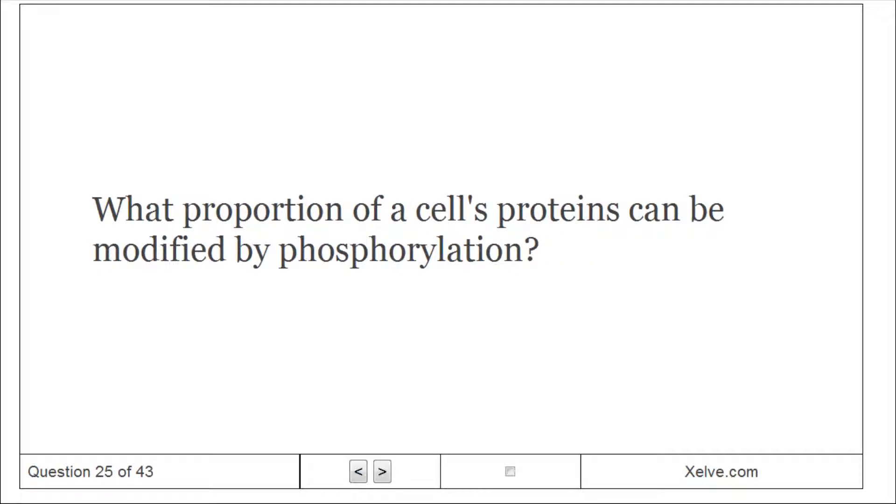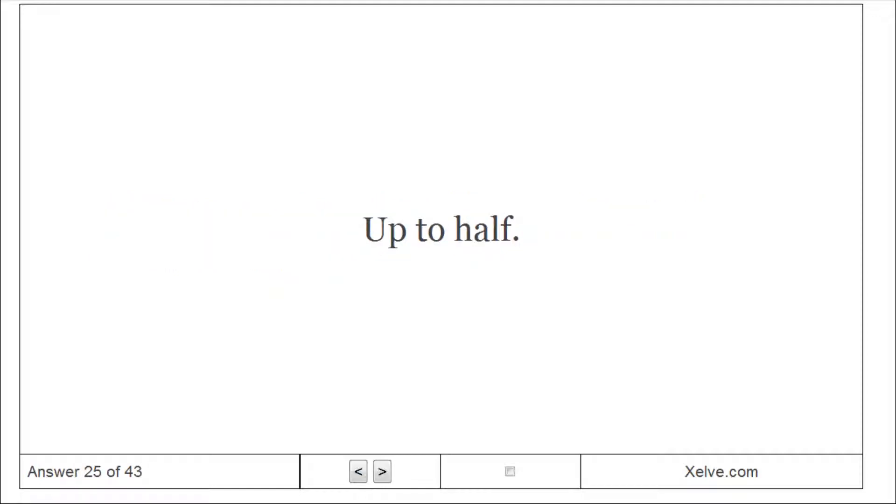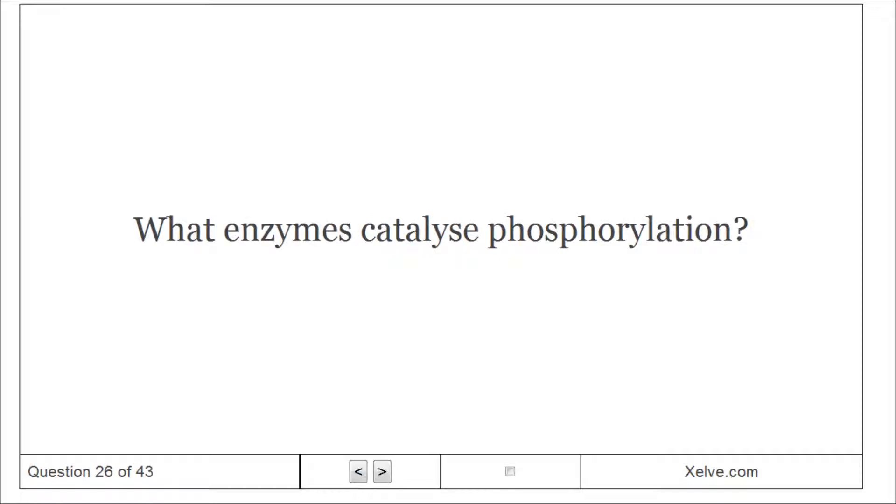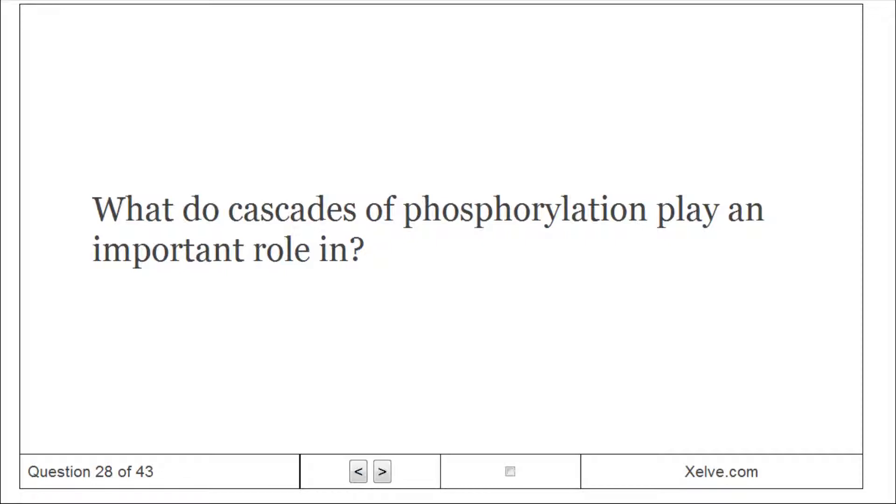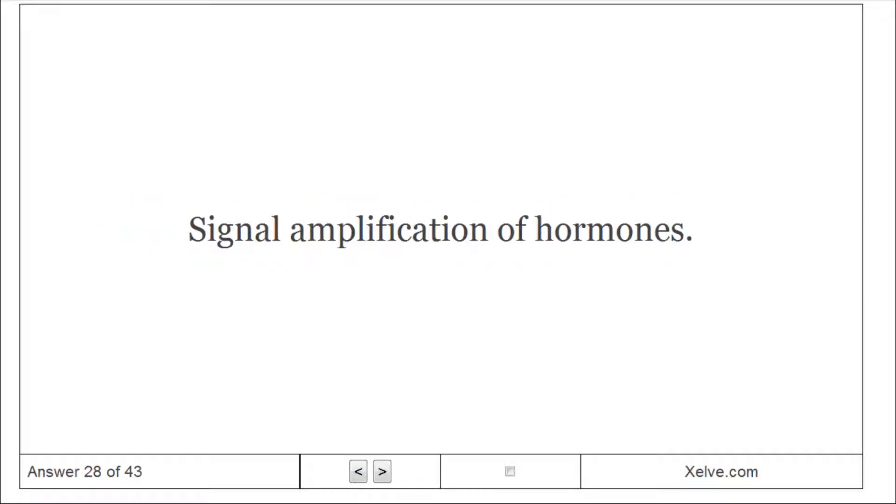What proportion of a cell's proteins can be modified by phosphorylation? Up to half. What enzymes catalyze phosphorylation? Protein kinases. What enzymes catalyze dephosphorylation? Phosphoprotein phosphatases. What do cascades of phosphorylation play an important role in? Signal amplification of hormones.